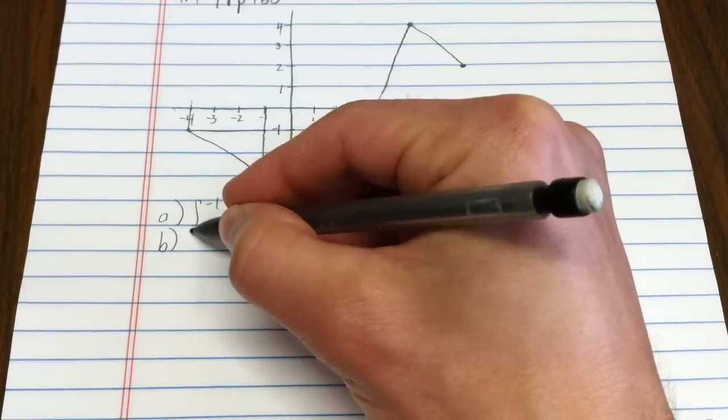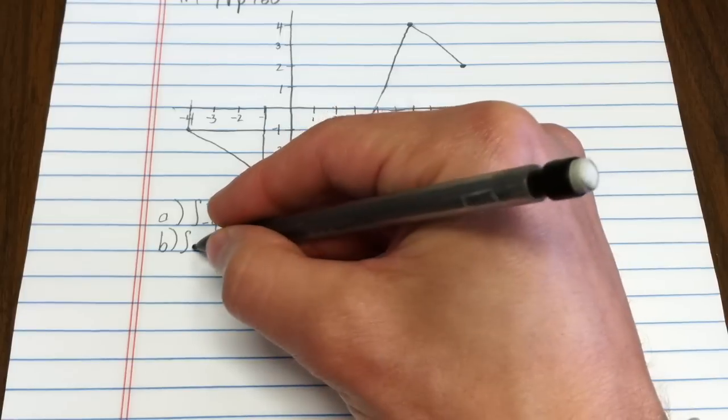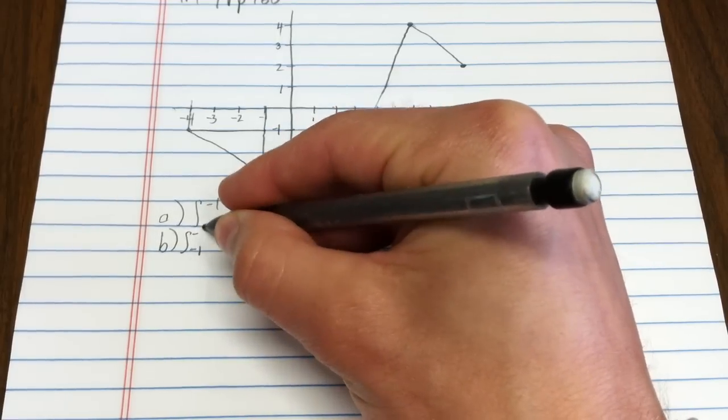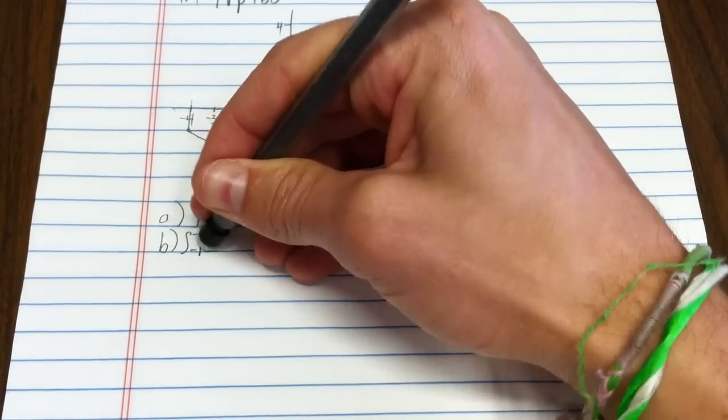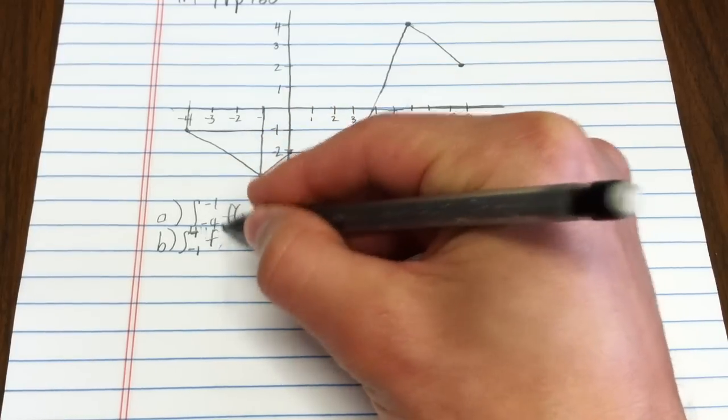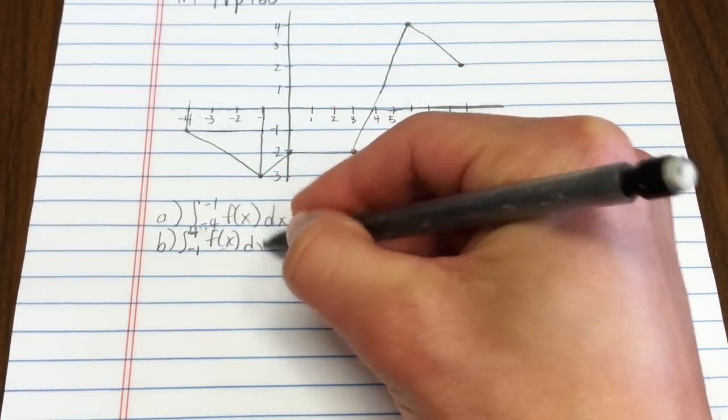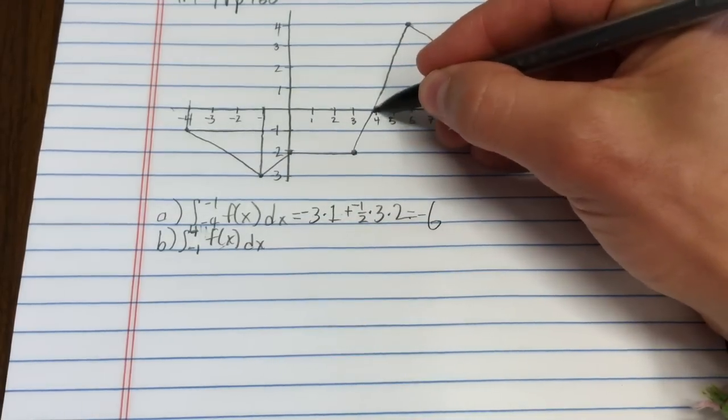So how about b? That asks us to find the integral from negative 1 to negative 4. Oops, from negative 1 to positive 4. I thought they were going to give me a softball. From negative 1 to negative 4. Isn't that grand?